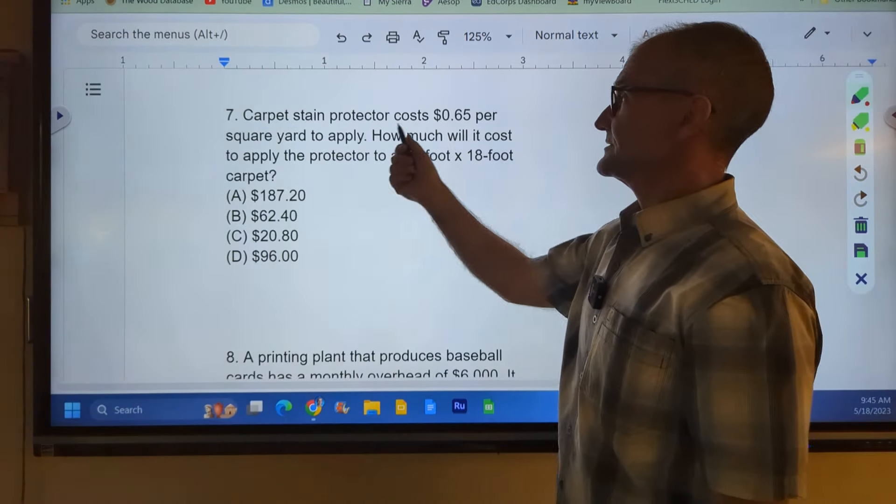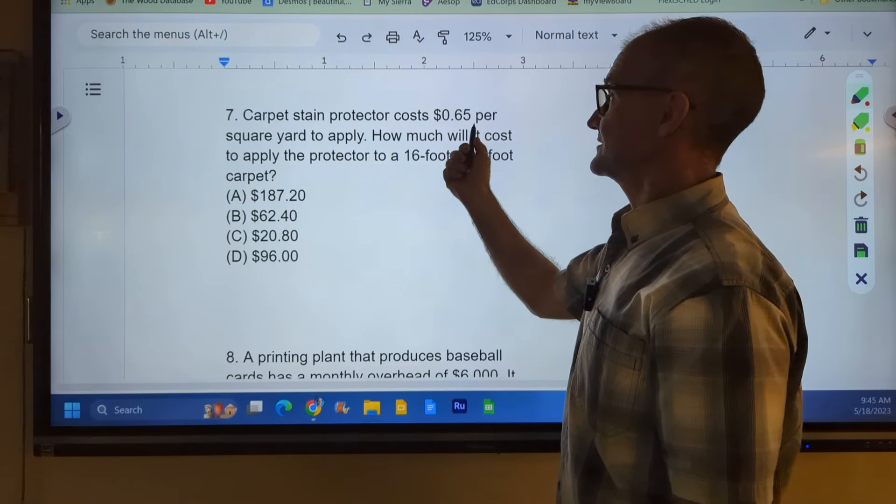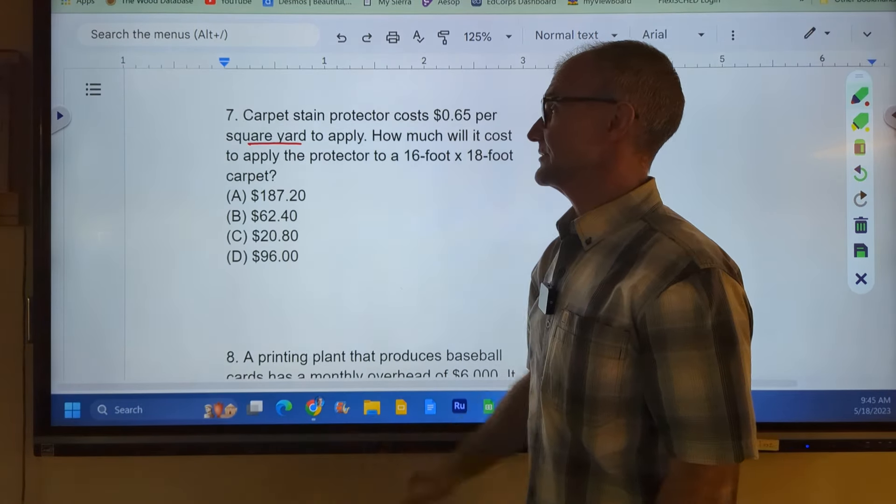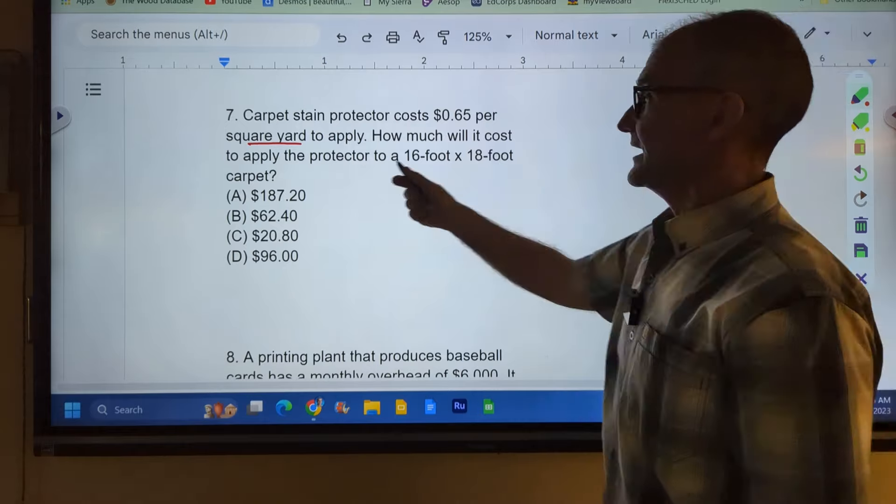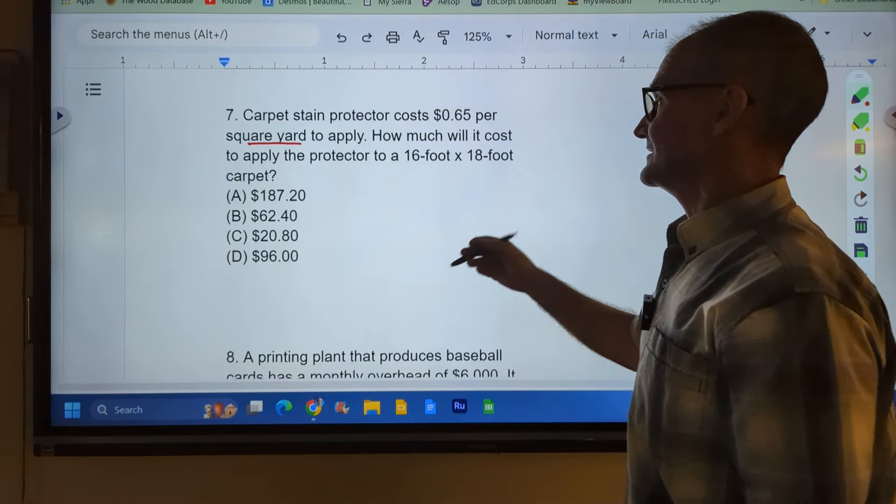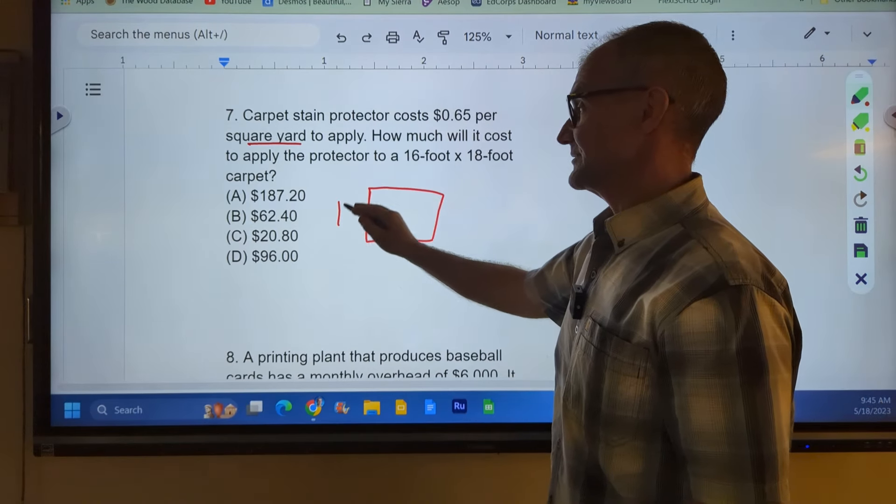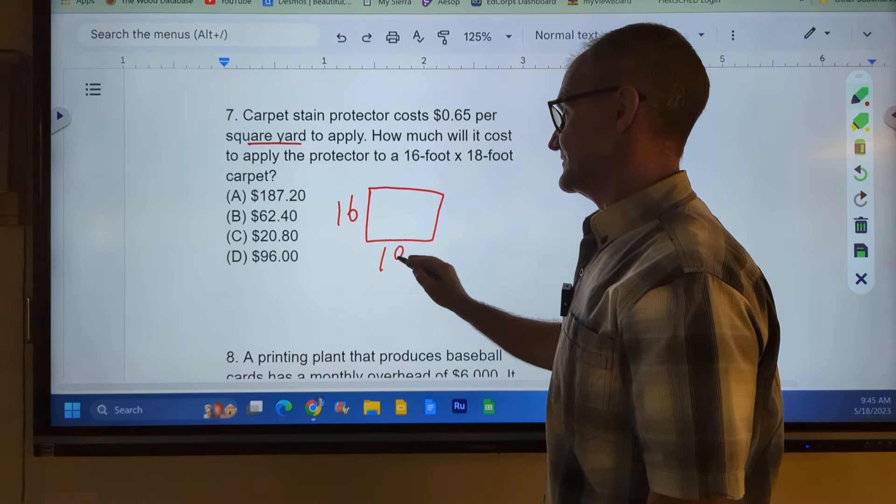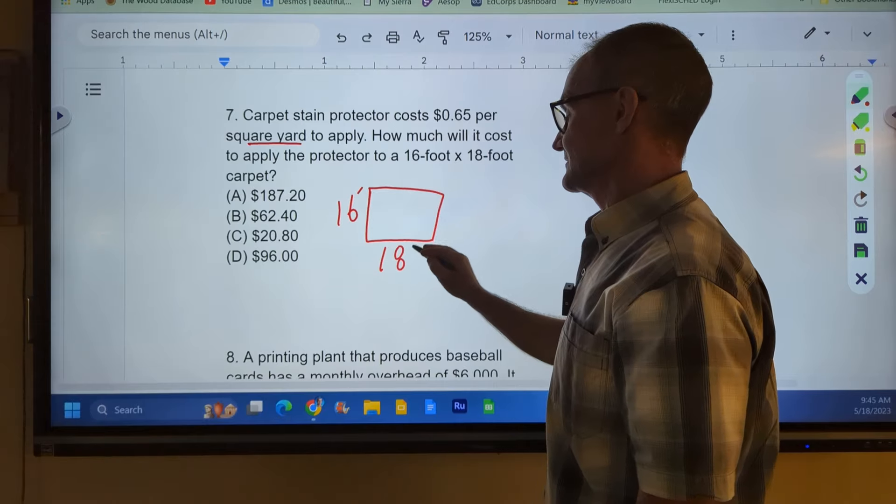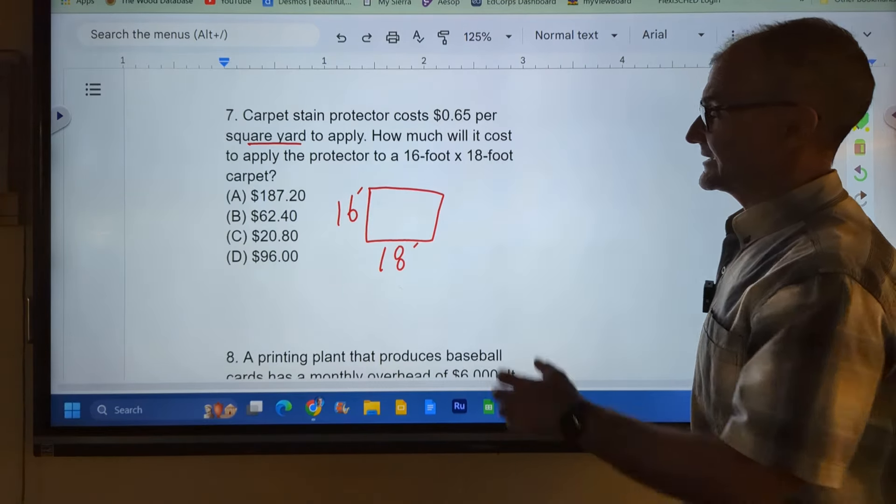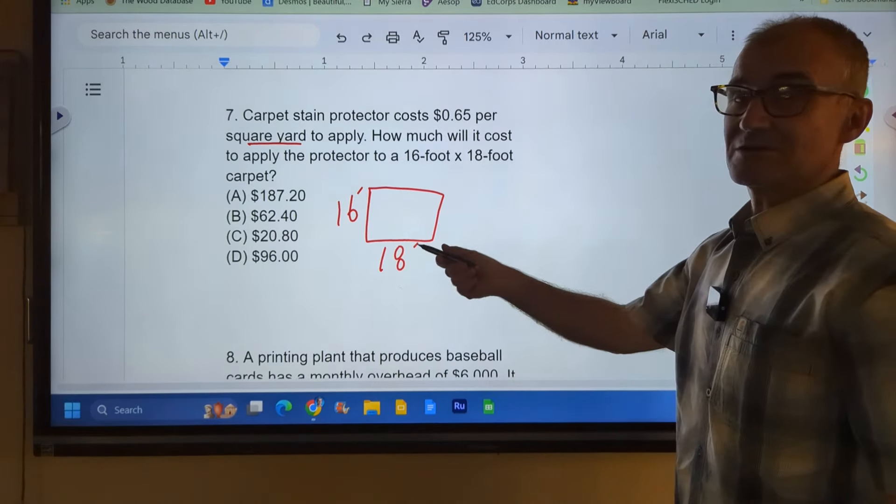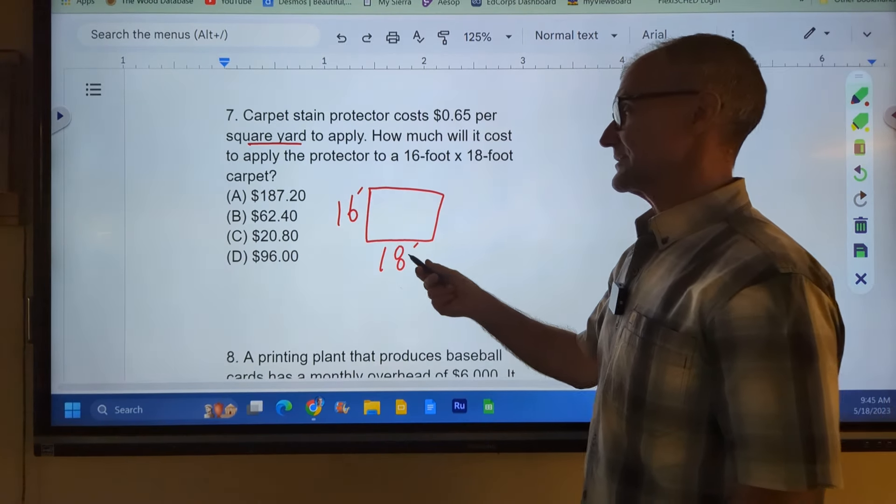Number seven. Carpet stain protector costs sixty-five cents per square yard. How much will it cost to apply the protector to a 16 foot by 18 foot carpet? So the first thing I notice here is we're talking about different units. I'm 16 feet by 18 feet. I could probably just turn that into yards right there. It's not going to work out to be an integer, but I think because there's so much variation in these answers, I'll probably be able to round and get an answer because none of them are that close.